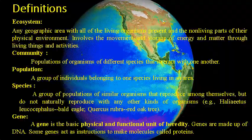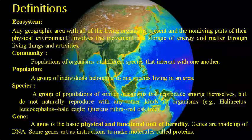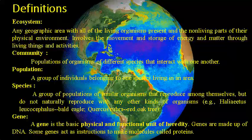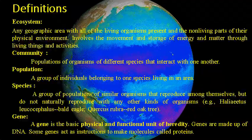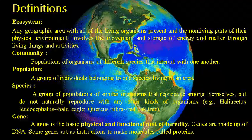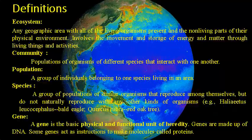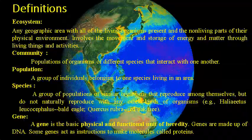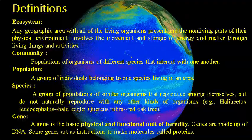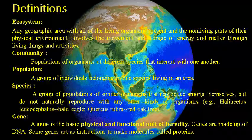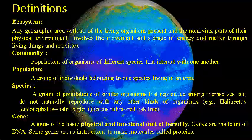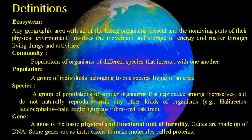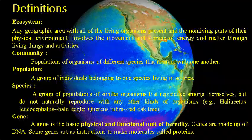Now let's move on to community. Community is a group or population of organisms of different species that could interact with each other. So it's a group that shares something in common context. And what is population? Population is a group of individuals belonging to one species living in an area — all the organisms of the same group or species who live in a particular geographical region. And most importantly, they are capable of interbreeding.